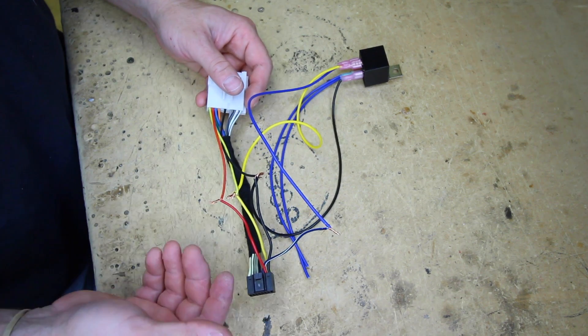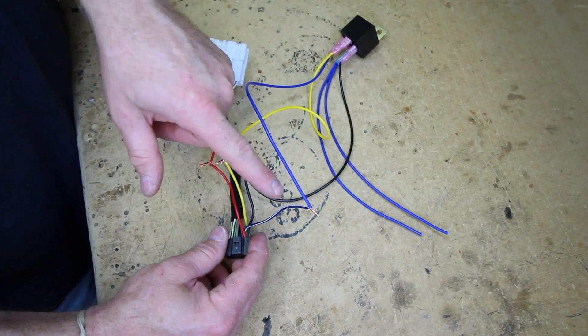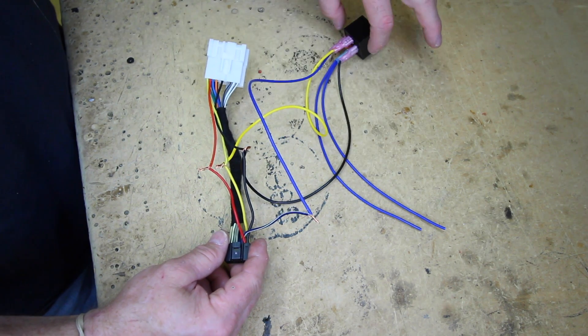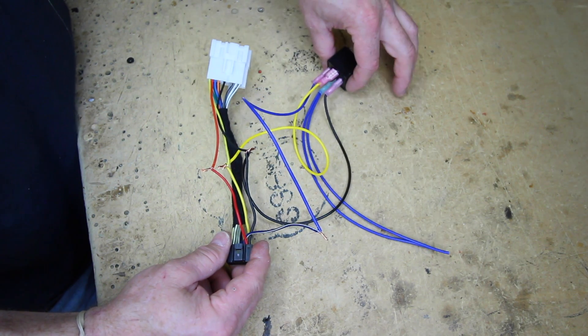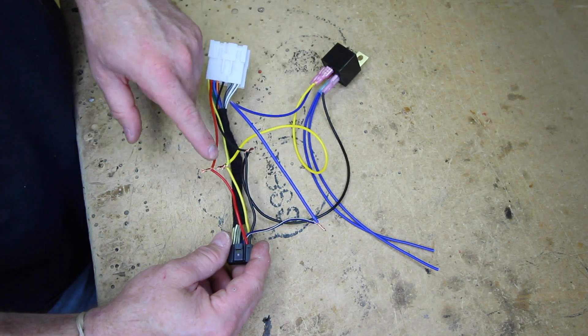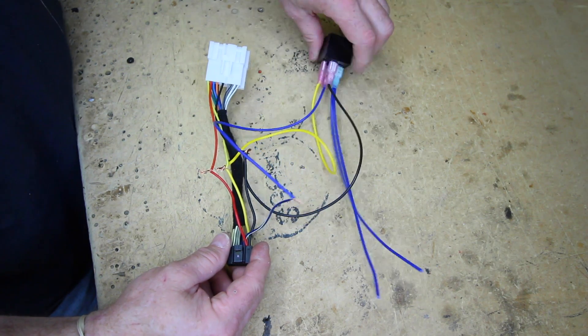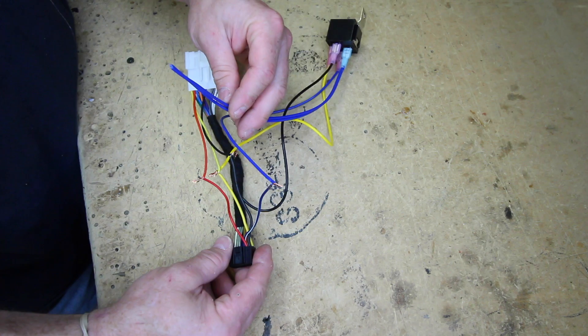So what we end up with is the remote turn on comes out of the radio to turn the relay on. The ground is connected so that the positive and the negative connect to turn the relay on. And then it's going to pass the constant 12 volts that we have hooked up to 87 out to 30. So now we have two wires that we can run back to turn on all our product.